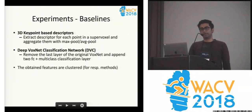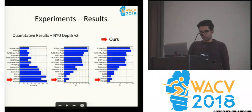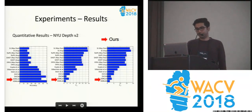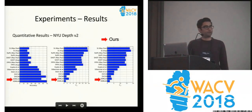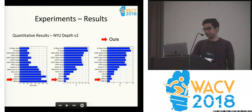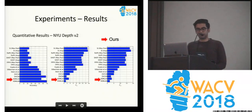For baselines, we used 3D keypoint-based descriptors and also a classification network. The numbers show that the deep learning-based method does better — on the left is accuracy where higher is better, and on the right are other metrics for which lower is better. We get better results than the competing baselines and existing methods.